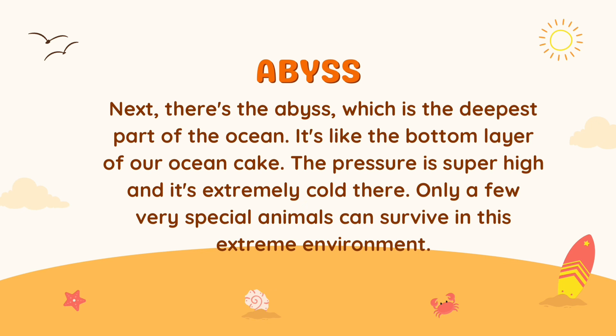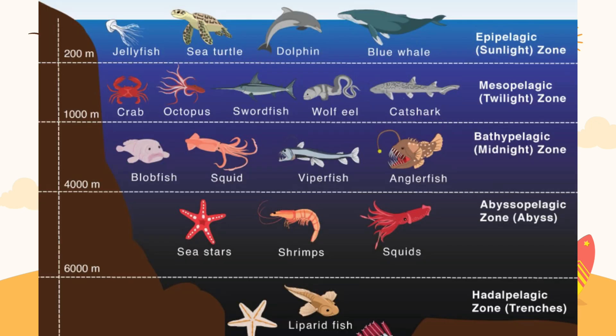Next we have the abyss, which is the deepest part of the ocean — it's like the bottom layer of our ocean cake. The pressure is super high and it's extremely cold there. Only a few very special animals can survive in this extreme environment.